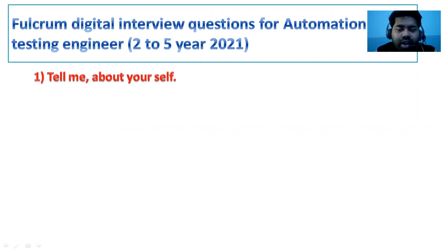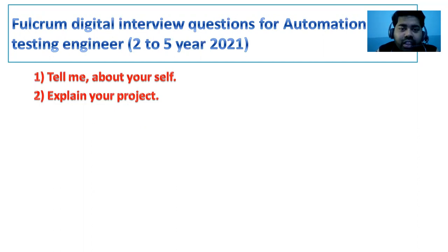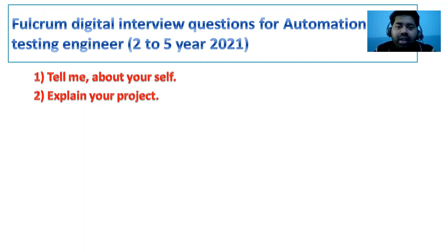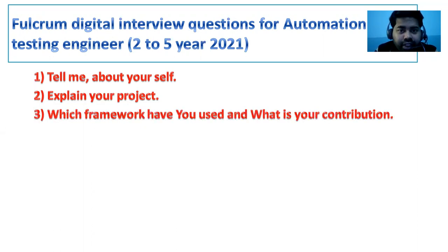The second question is 'Explain your project.' Whether you are a manual tester or an automation test engineer, you have to tell about your project — your roles and responsibilities, your automation work, your framework, and your domain. Stay with me till the end of the video for the proper answer.